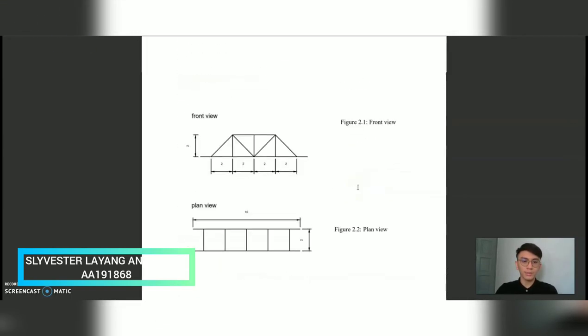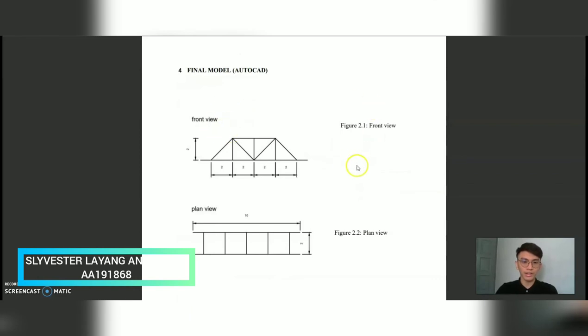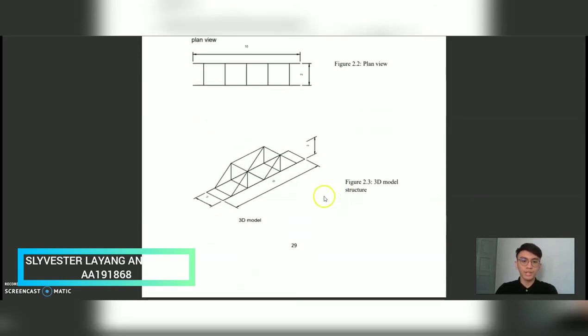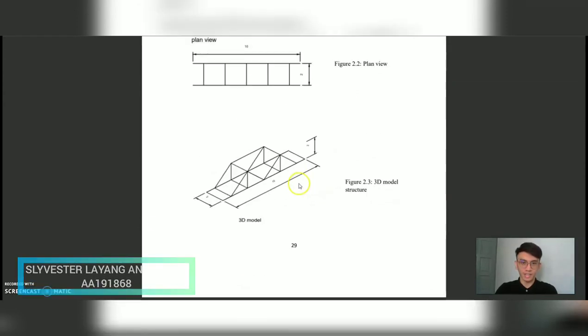And the final model by using AutoCAD. This is the front view, 2 meter for each length of the member. This is the plan view and this is the 3D model structure. That's all from me, thank you.